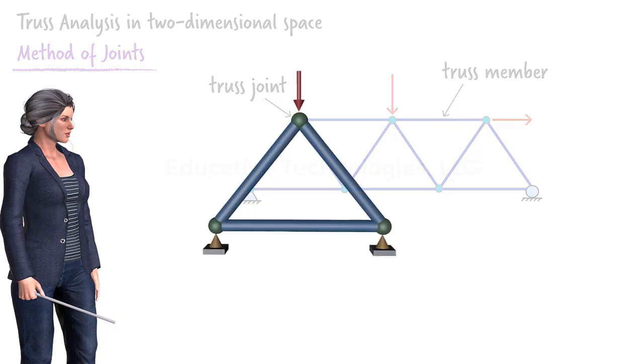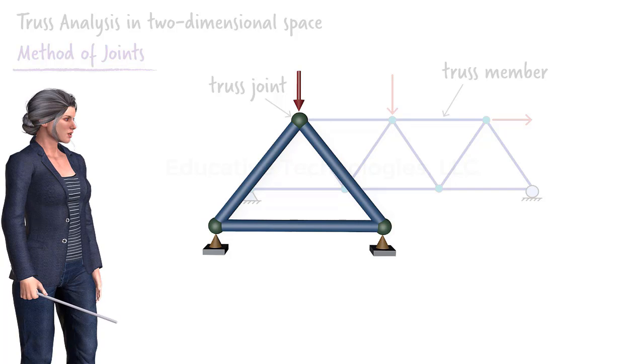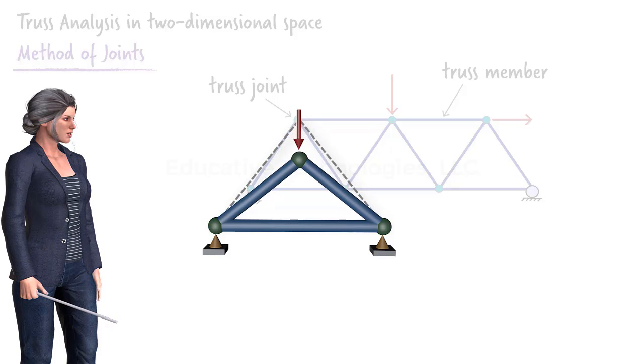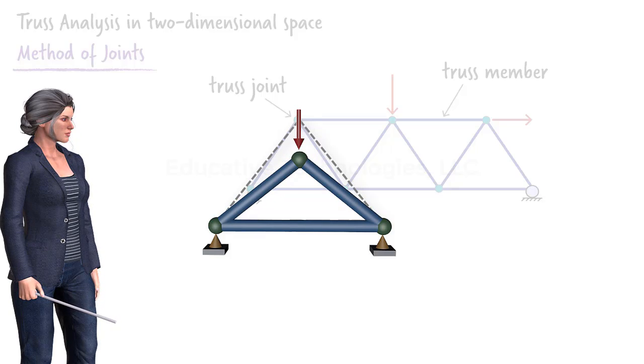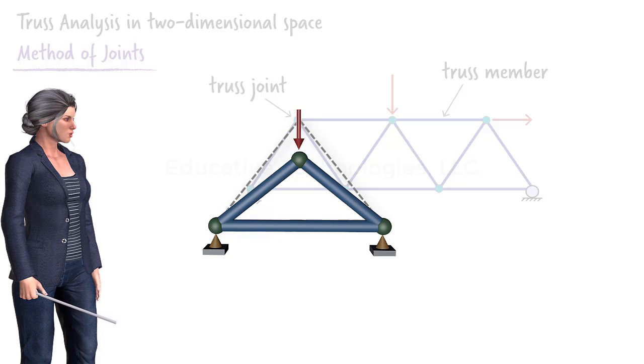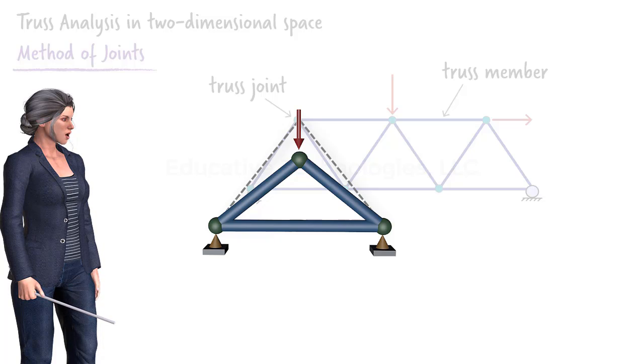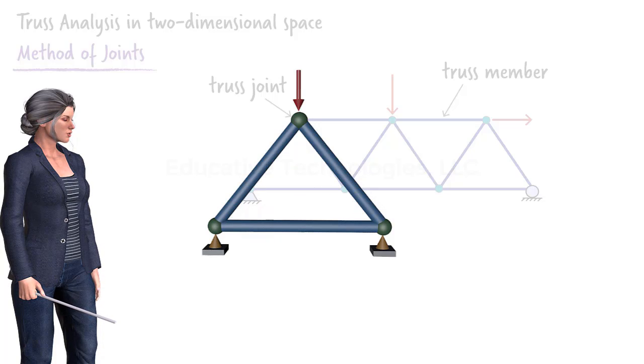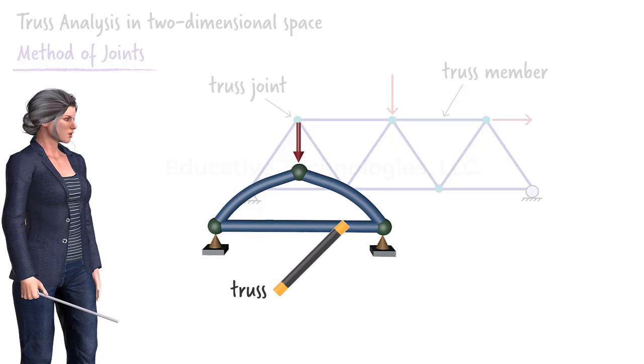For example, consider this simple truss. Under the applied load, the top joint is going to displace downward, forcing the two inclined members to rotate inward. The important point to keep in mind is that although the members change length to accommodate the new truss configuration, they remain straight bars, they do not bend. So this kind of deformation does not take place in trusses.